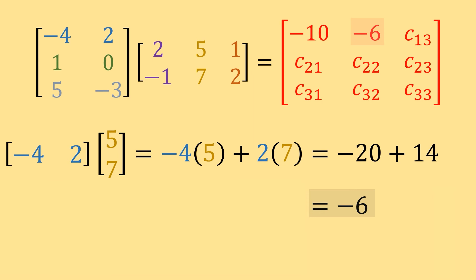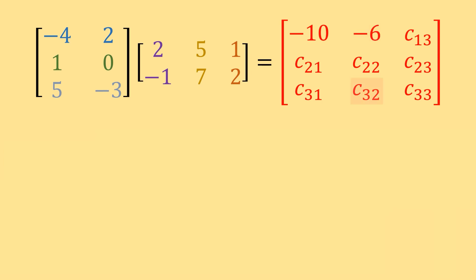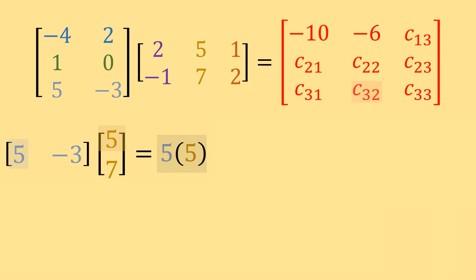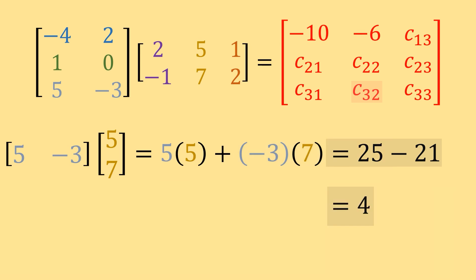Let's jump out of order and find C32. This uses the third row from our first matrix times the second column of our second matrix. So we multiply 5, negative 3 times 5, 7. That equals 5 times 5 plus negative 3 times 7, which equals 25 minus 21, which equals 4. So 4 goes in position C32. You can jump to any position and use its indices as a guide to know which row and column to take from the two matrices.